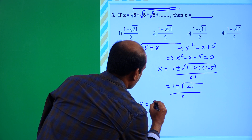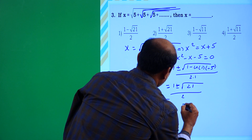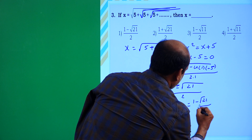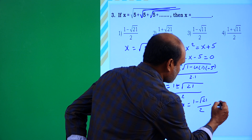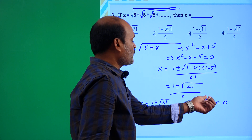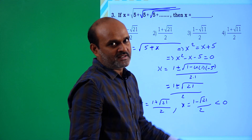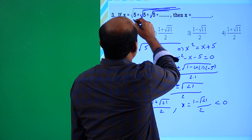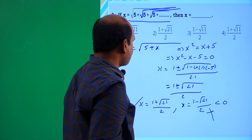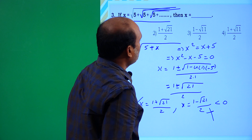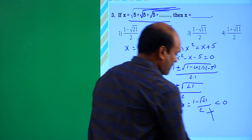The values of x are (1 + √21)/2 or (1 - √21)/2. Taking x = (1 - √21)/2 gives a negative value since √21 ≈ 4.something, making it about -3.something. Negative values don't exist under a square root in the real number system, so that answer is incorrect. The correct answer is x = (1 + √21)/2, which is the second option.